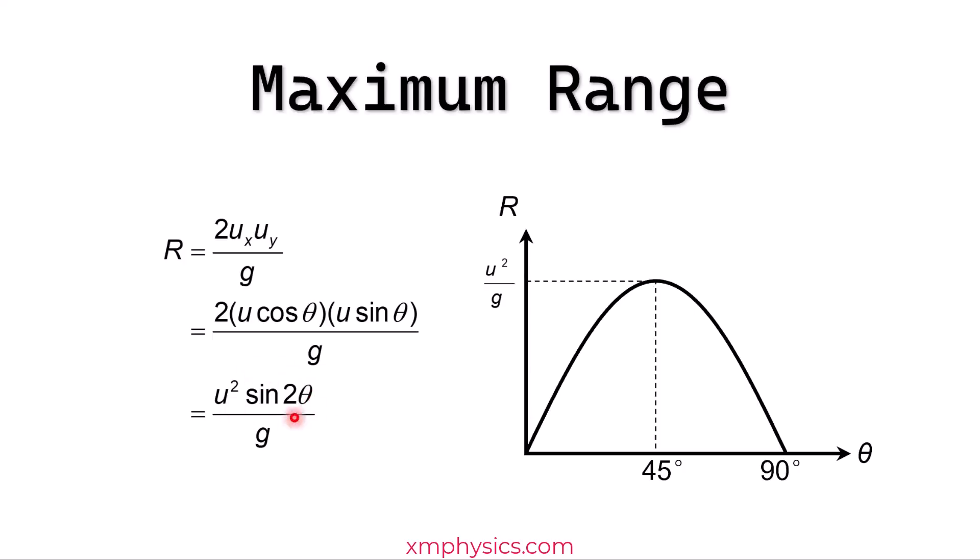Because sine 2 theta can only vary between negative 1 and 1, right? So the maximum value of sine 2 theta is 1. So when theta is 45 degrees, we get a maximum range, which is just u squared divided by g.